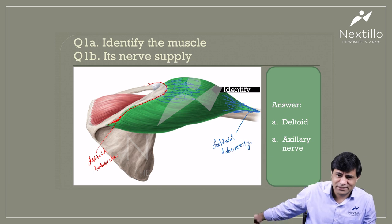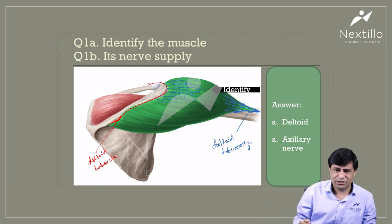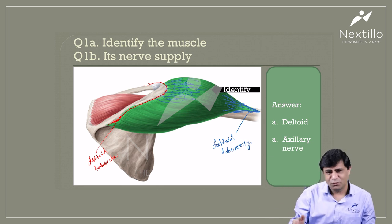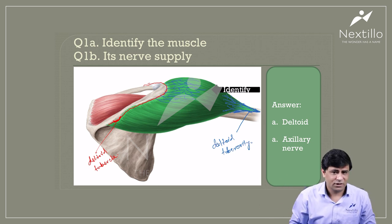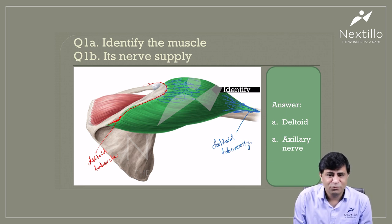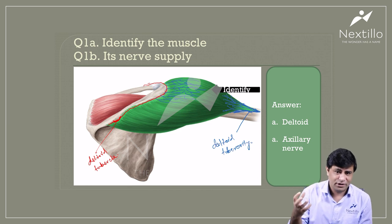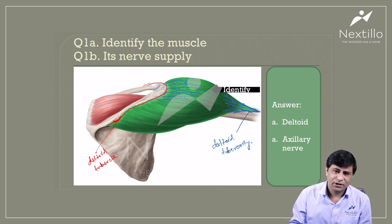When you combine extension, abduction, flexion, and adduction, this forms circumduction — all the movements possible at the shoulder joint. The shoulder joint is the most freely movable joint in the human body, a ball-and-socket variety. The freedom comes because much of the head of the humerus stays out of contact with the glenoid facet.